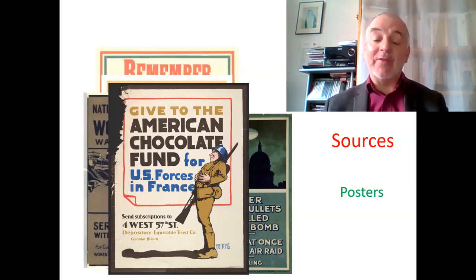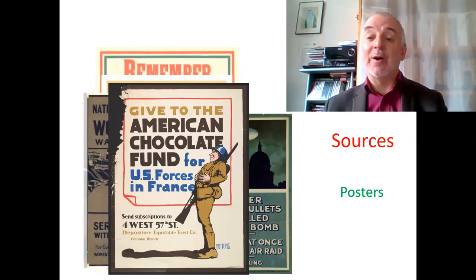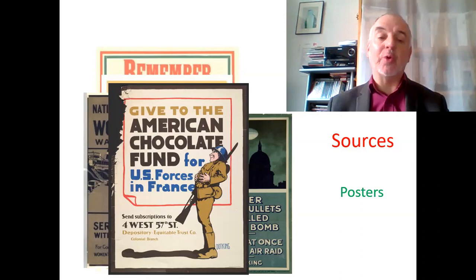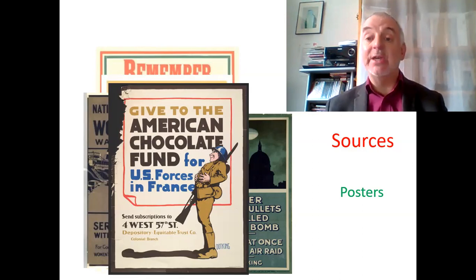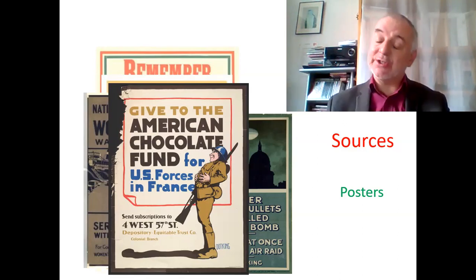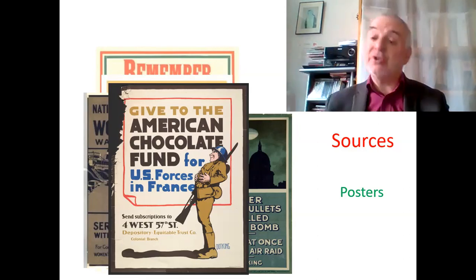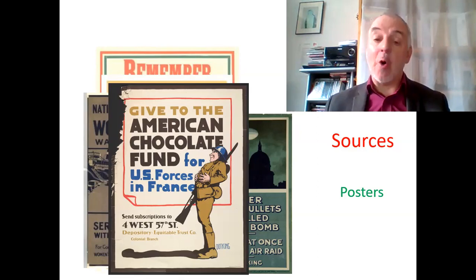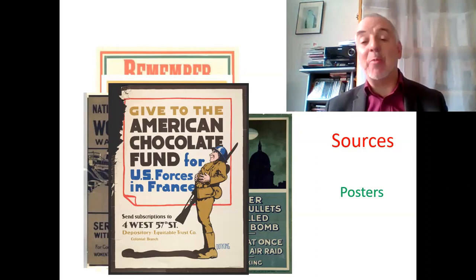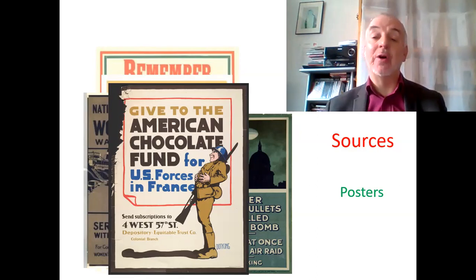Soldiers certainly needed private help. For example, bulletproof vests did exist at the time, but you could only have one if you bought your own. In British newspapers you can see adverts saying 'this will protect you against bullets — buy it and send it to your brother or husband fighting in the trenches.' I haven't been able to find out how popular they were, though they probably would have faced issues around expectations of brave masculinity.